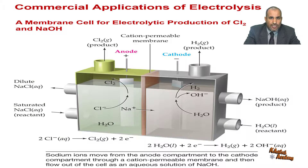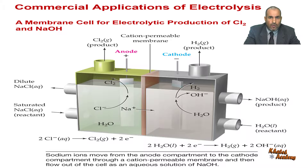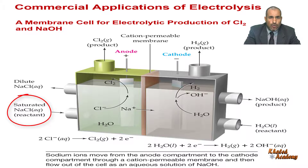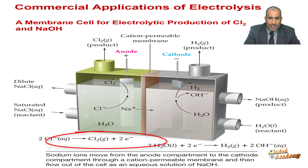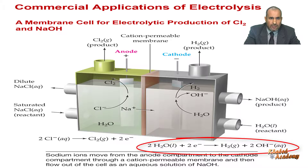This cell shows the essential features of a membrane cell for commercial production of chlorine and sodium hydroxide. A saturated aqueous solution of sodium chloride, called brine, flows into the anode compartment where chloride is oxidized to chlorine gas, and water enters the cathode compartment where it is converted to hydrogen gas and OH⁻ ions.